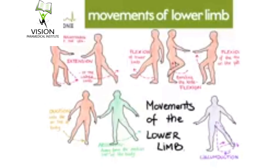Next are movements at the lower limb. First is flexion of the thigh: when the front of the thigh comes in contact with the front of the abdomen, it is called flexion of the thigh or flexion of the hip joint. Extension is the opposite: when the person stands erect, it is extension of the thigh. Abduction means when the thigh is taken away from the median plane, and adduction means when the thigh is brought close to the median plane. Medial rotation is when the thigh is turned medially, and lateral rotation is when the thigh is turned laterally.